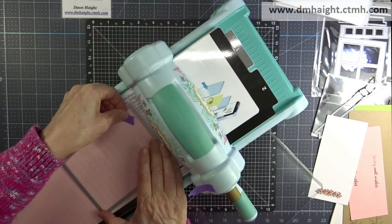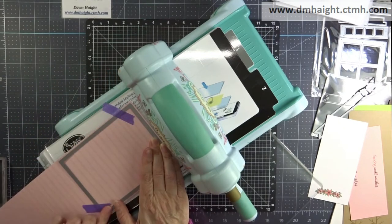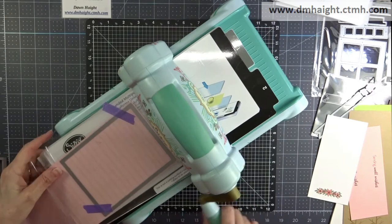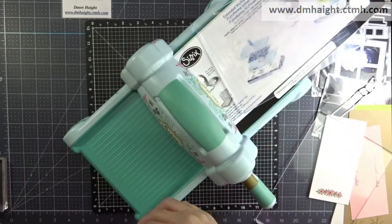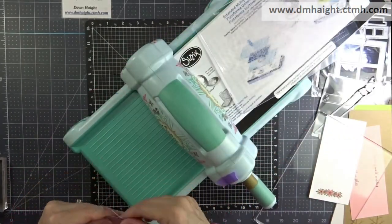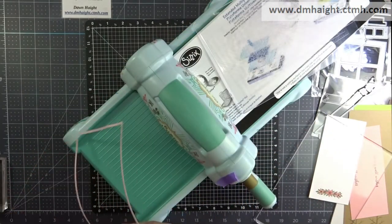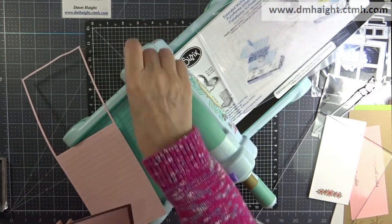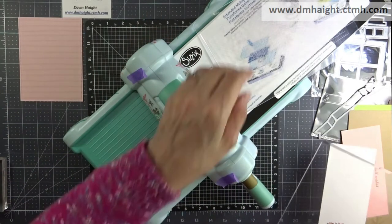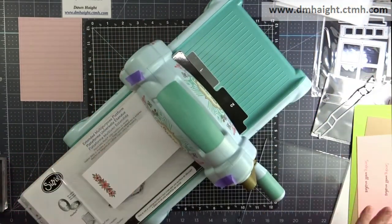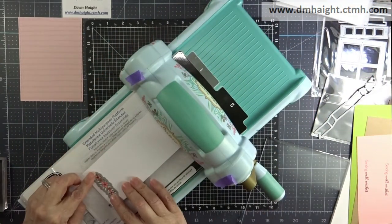So this die is from Lawn Fawn. It's a stitched rectangle and it's exactly the size of an A2 card front. So it's four and a quarter by five and a half. I like to use it a lot because it's got that stitched border right around the edges and it's exactly the size that I need for my card base.